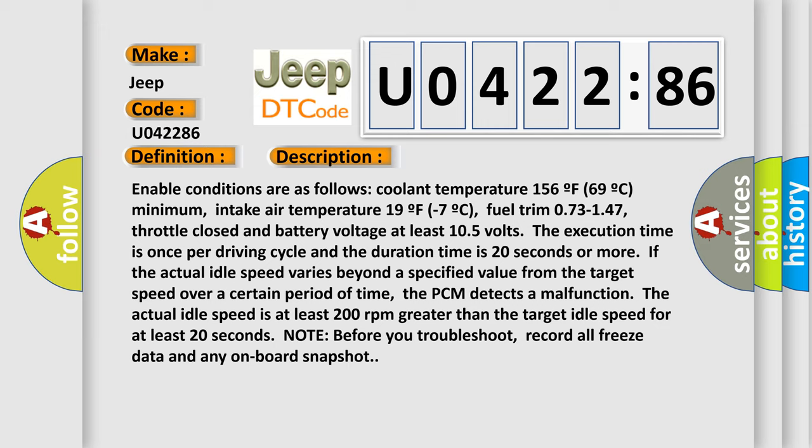The execution time is once per driving cycle and the duration time is 20 seconds or more. If the actual idle speed varies beyond a specified value from the target speed over a certain period of time, the PCM detects a malfunction. The actual idle speed is at least 200 RPM greater than the target idle speed for at least 20 seconds. Note before you troubleshoot: record all freeze data and any on-board snapshot.